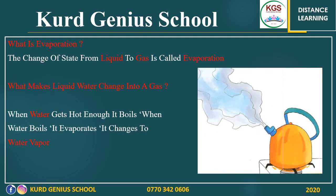What is evaporation? The change of state from liquid to gas is called evaporation. What makes liquid water change into a gas? When water gets hot enough, it boils. When water boils, it evaporates and changes to water vapor.